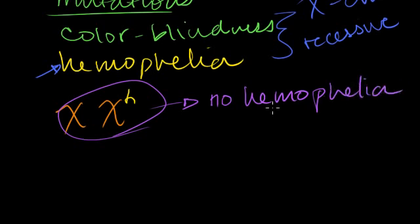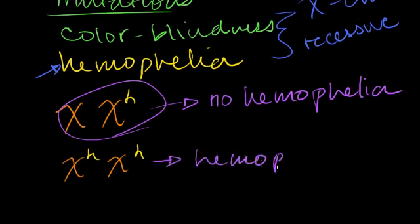She'll have no problem clotting her blood. The only way that a woman could be a hemophiliac is if she gets two versions of this. Because this is a recessive mutation. Two versions. Now this individual will have hemophilia.